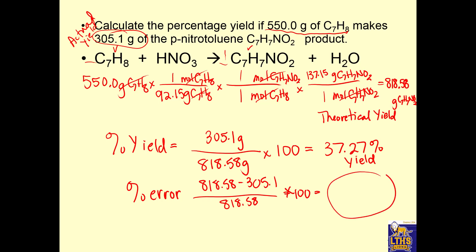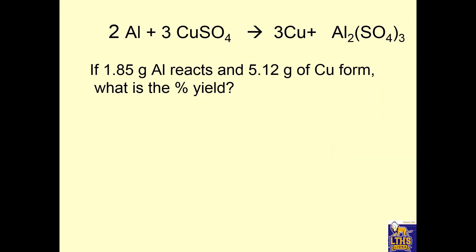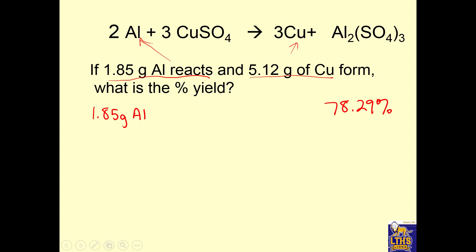I want you to predict what the percent error should be. Remember that percent error tells you how wrong you were, and percent yield tells you how right you were. Let's look at another problem — a balanced equation. If 1.85 grams of aluminum reacts and 0.512 grams of copper forms, what is the percent yield? I want you to try this problem. The answer is 78.29 percent — see if you can get that, and we'll check it in class.